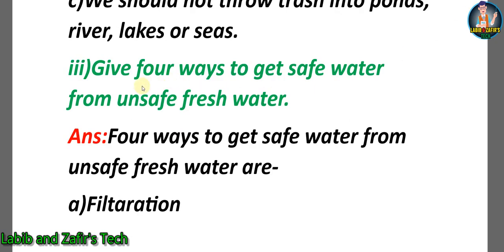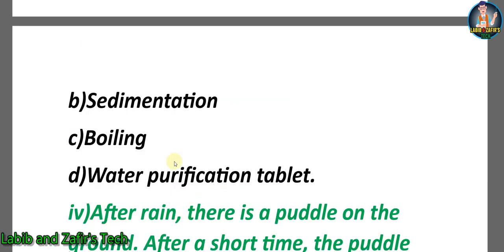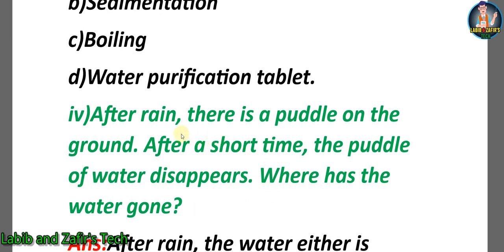Third question: Give four ways to get safe water from unsafe fresh water. Answer: Four ways are — A) Filtration, B) Sedimentation, C) Boiling, and D) Water purification tablet.